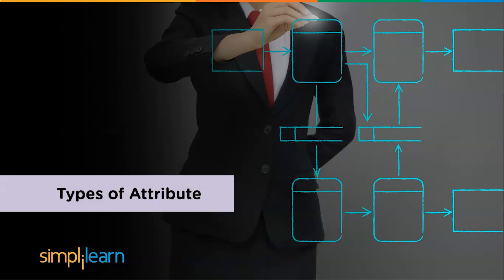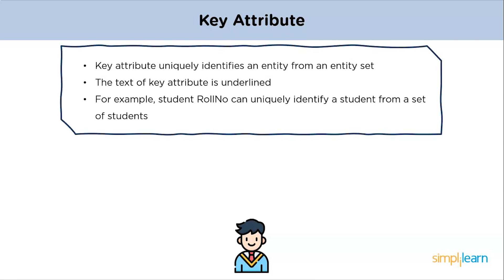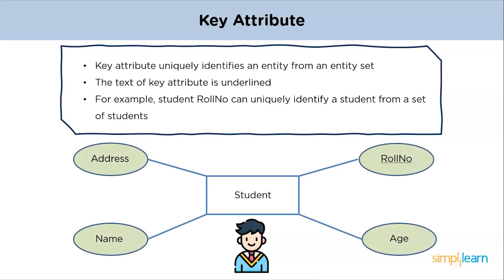The key attribute uniquely identifies an entity from an entity set, and the text of a key attribute is underlined. In the example, the student entity has attributes name, address, roll number, and age. Roll number can uniquely identify a student from a set of students — that's why it is termed as a key attribute.